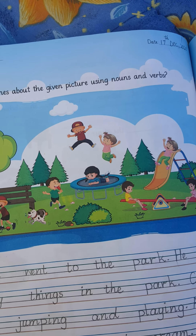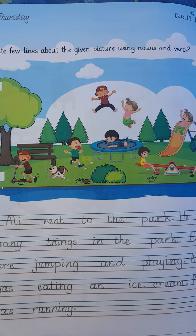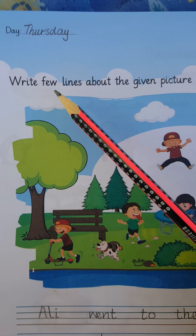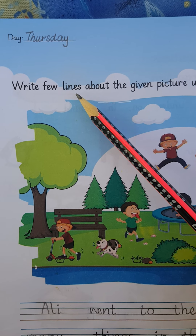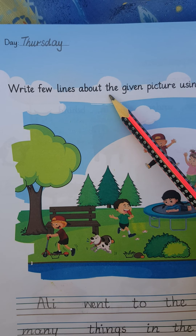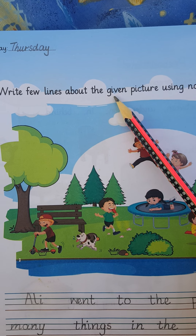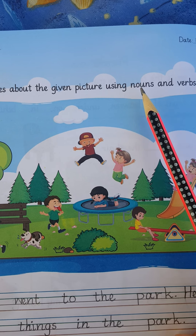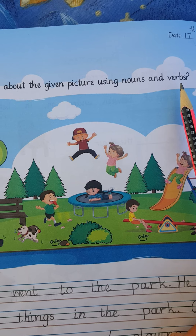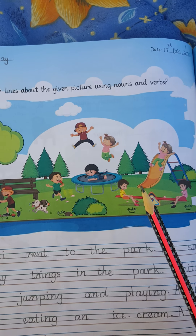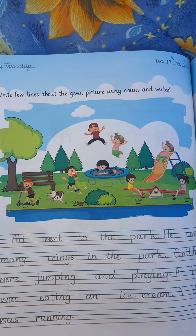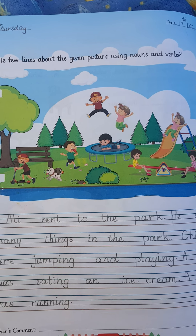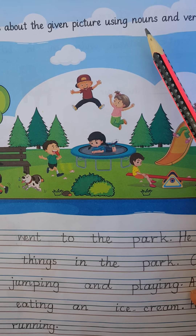Let's see what we have to do on this page. We have to write few lines about the given picture using nouns and verbs. First of all, you have to tell me what are nouns.